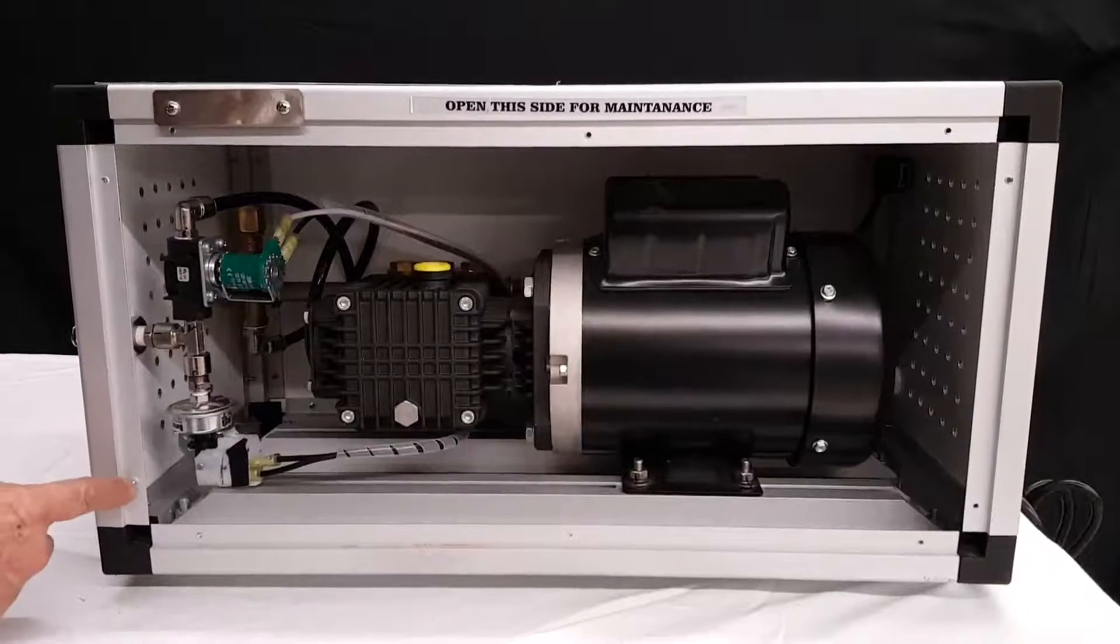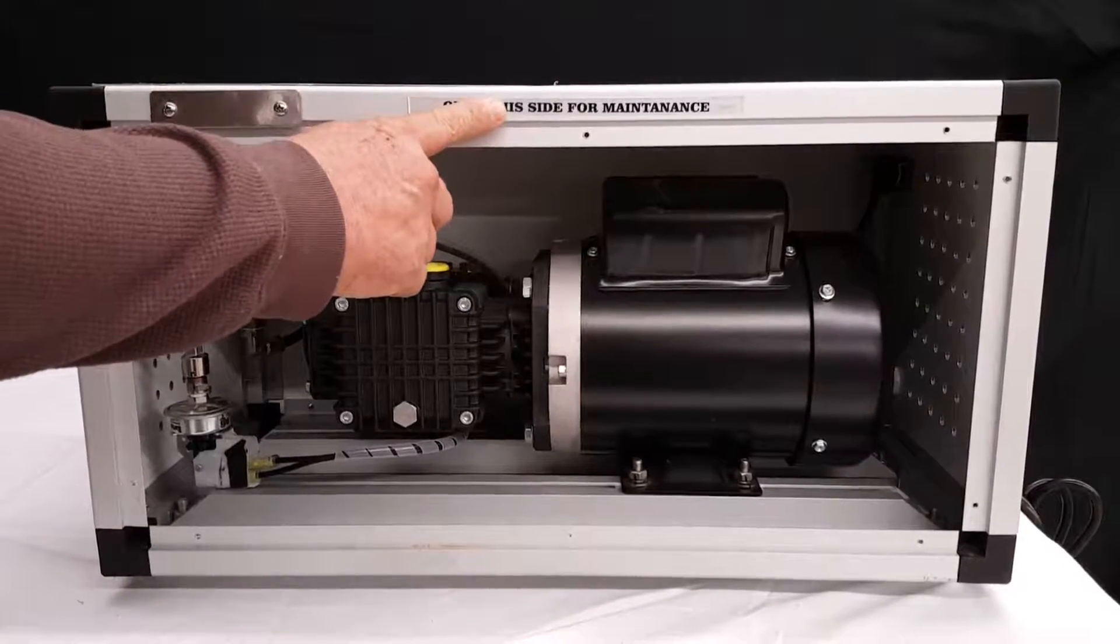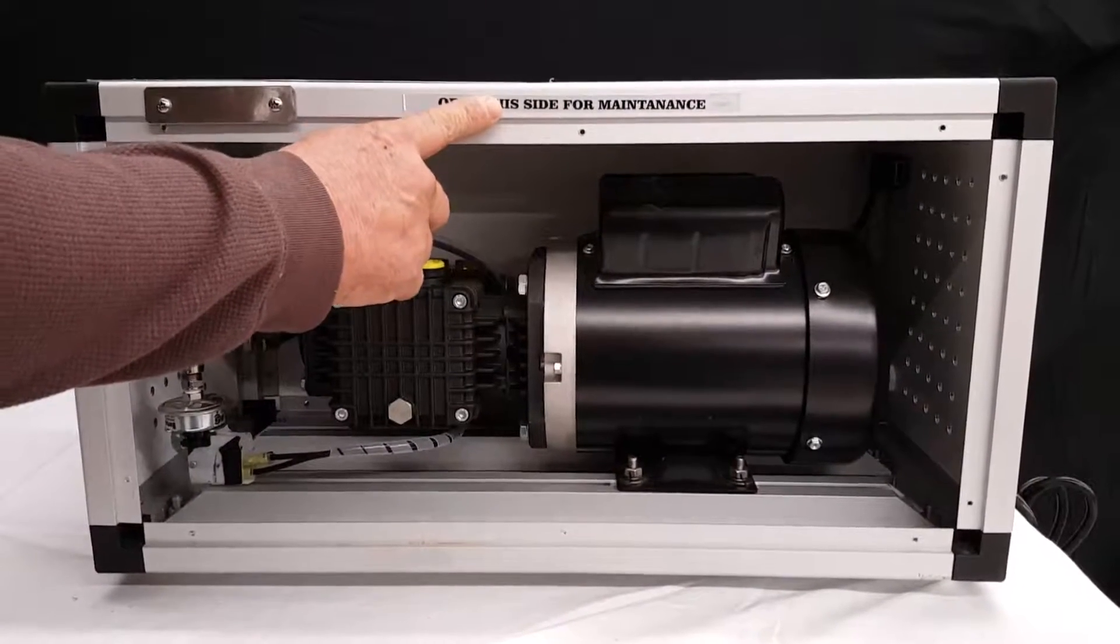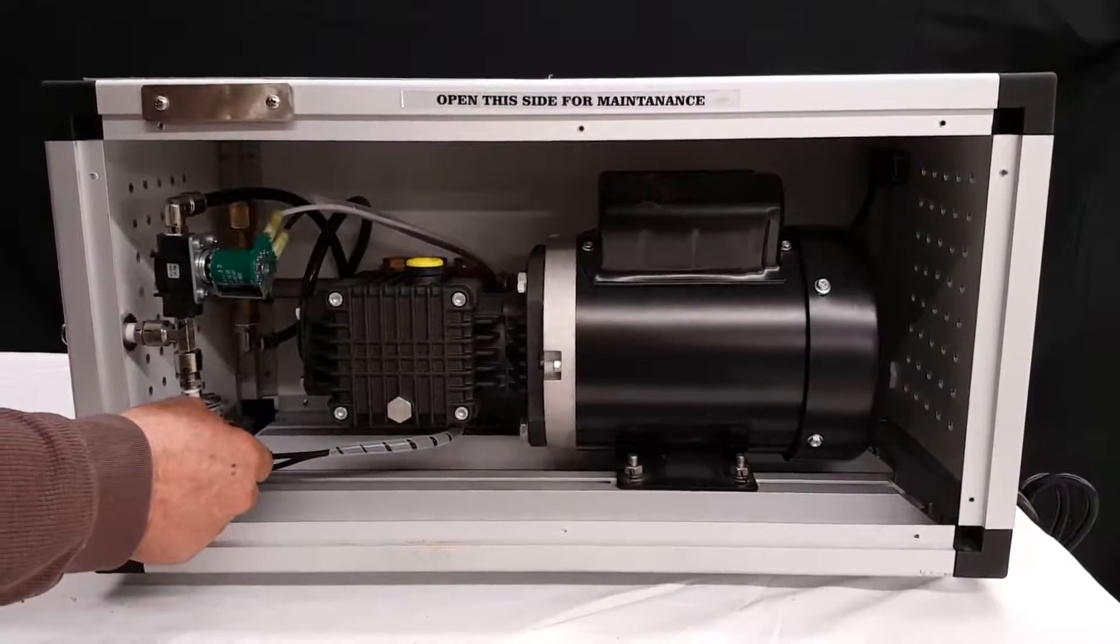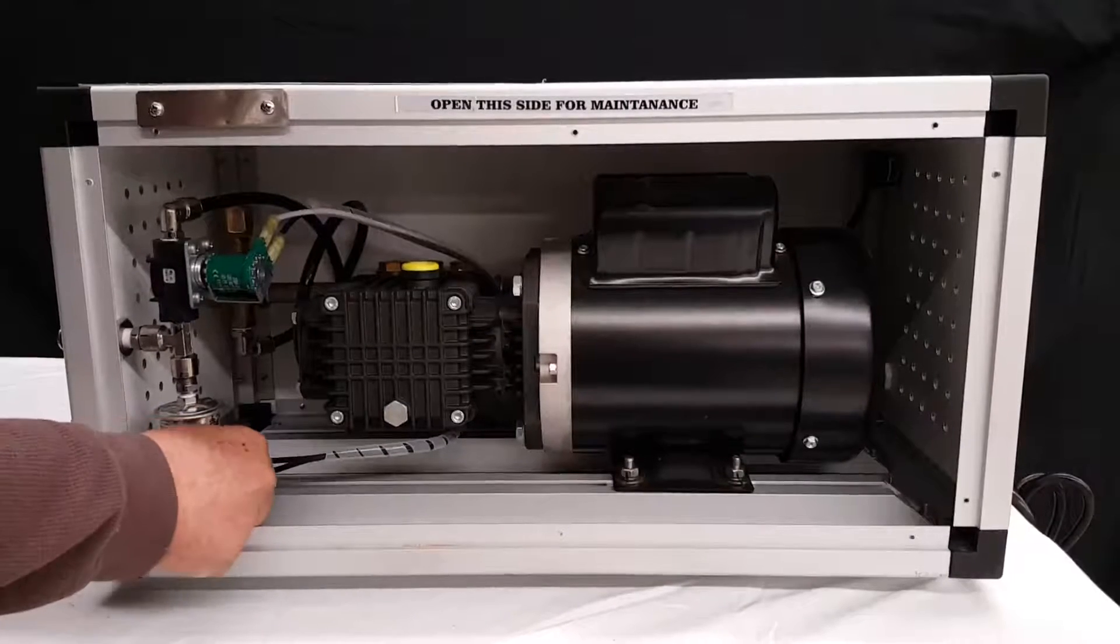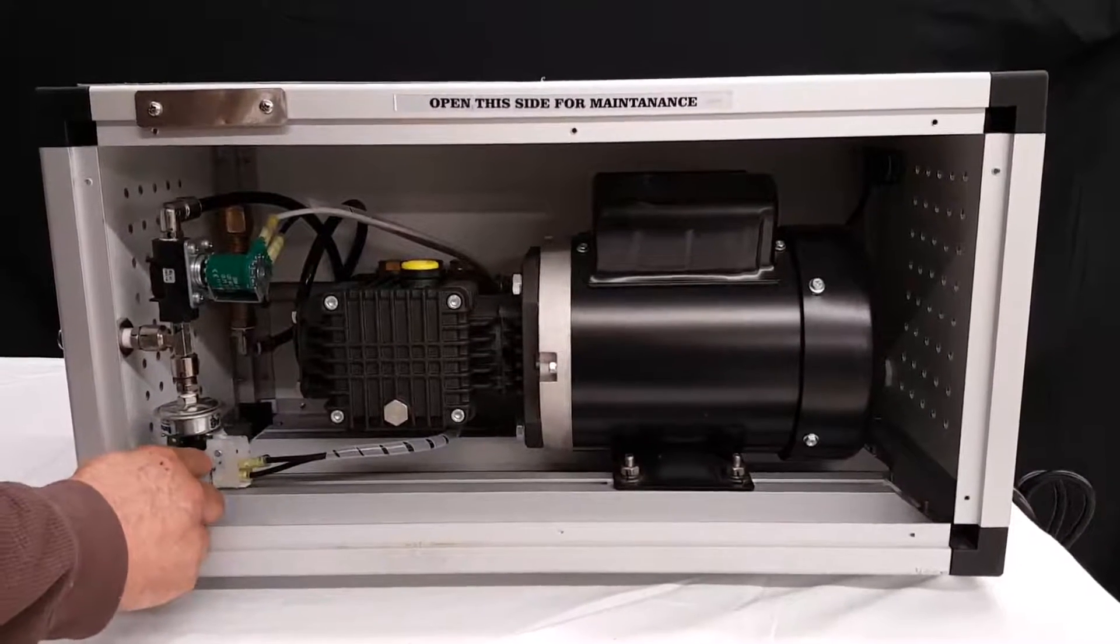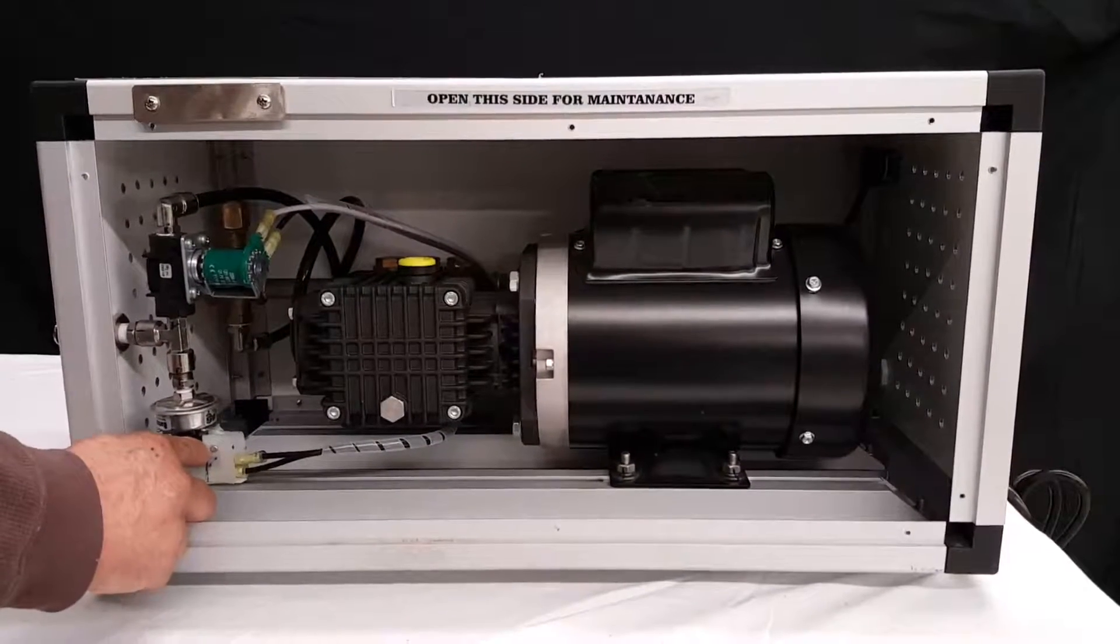Take the ten panels out of the side that says 'Open this panel for maintenance.' Come inside, take the tape off of your wire connectors on the pressure switch. This is your pressure switch here.